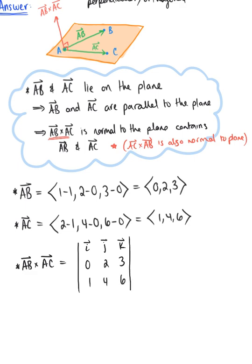Here we go. By the cross product, we have 2 times 6 is 12, minus 4 times 3 is 12, i hat, minus 0 times 6 is 0, minus 1 times 3 is 3, j hat, plus 0 times 4 is 0, minus 1 times 2 is 2, k hat.